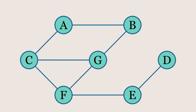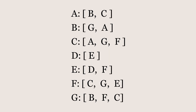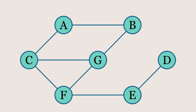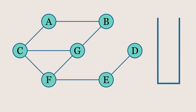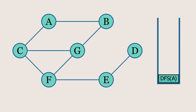Let's see how a depth first search, or DFS, algorithm works in a graph. Here we have this graph and the corresponding adjacency list showing how each node connects to others. Our goal is to explore it using DFS. We'll start with the recursive approach first. On the right, we have this recursion stack, which helps us keep track of where we are in the search as we go deeper into each path. Let's begin DFS from node A.